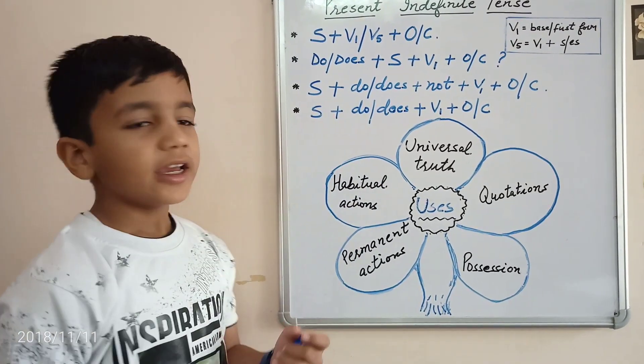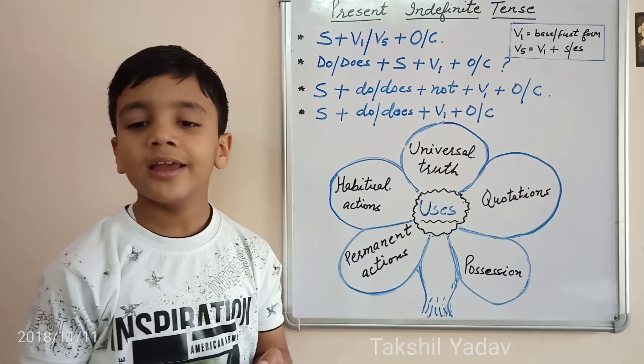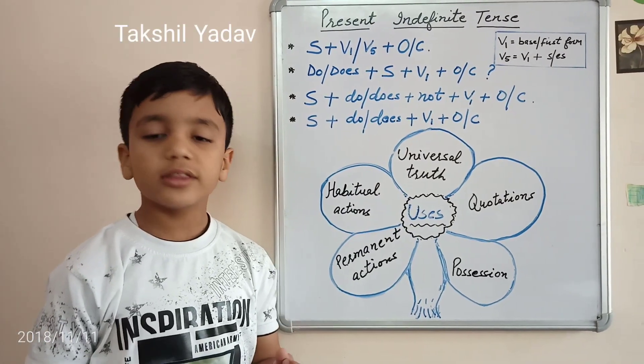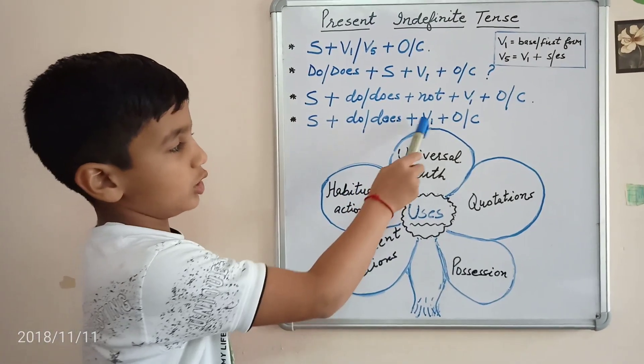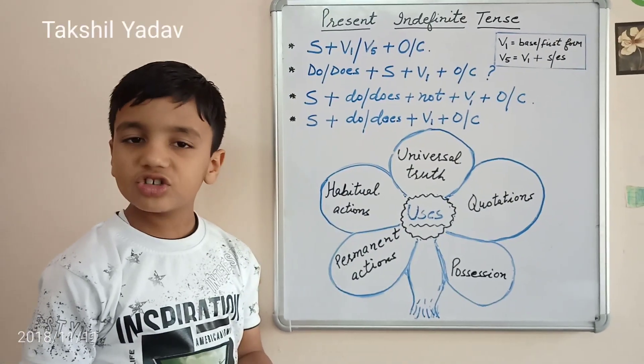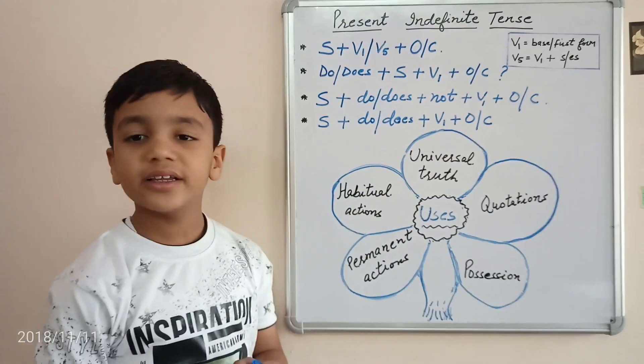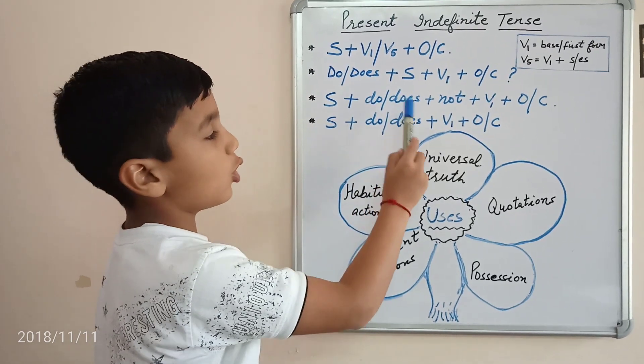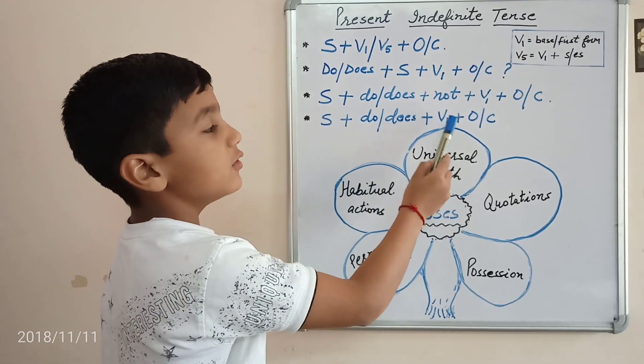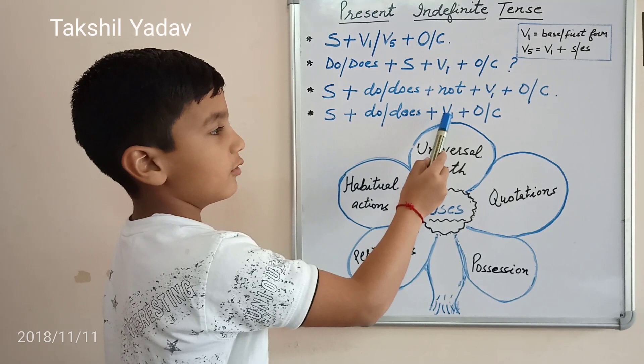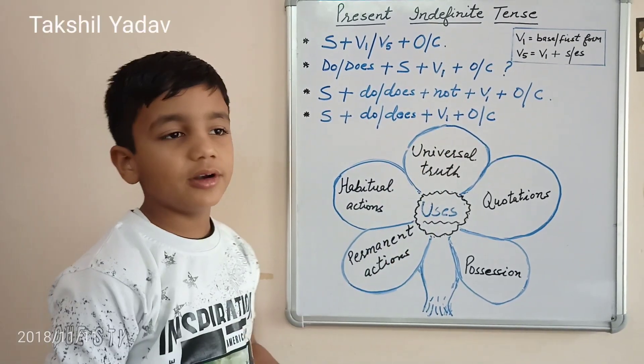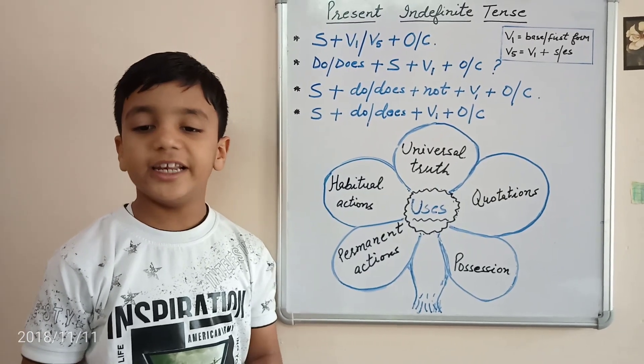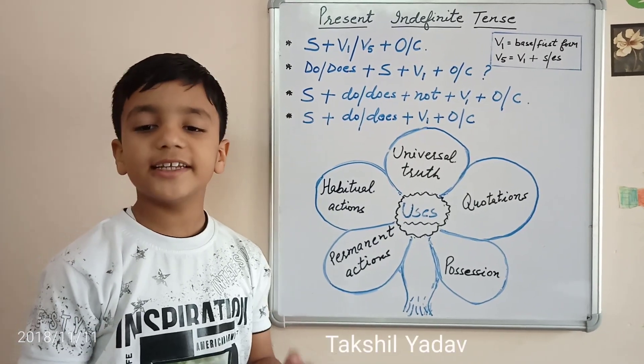Now, Emphatic Structure. In any Emphatic Sentence, we know that the main verb is focused. So, that is why we add Do or Does to the main verb. The structure of Present Indefinite Tense in an Emphatic Sentence is Subject plus Do or Does plus the base form of the verb plus Object or Complement. For example, I do go to school daily. He does read a novel.